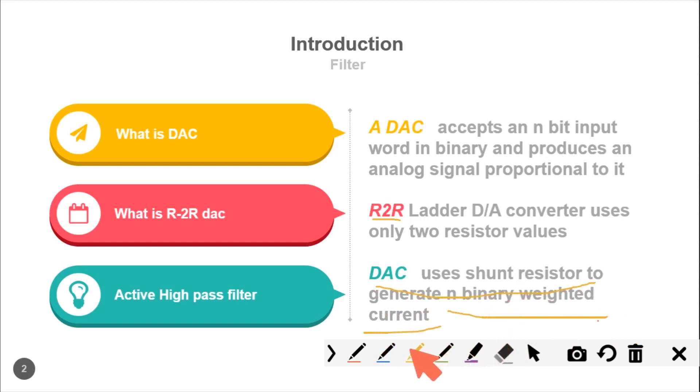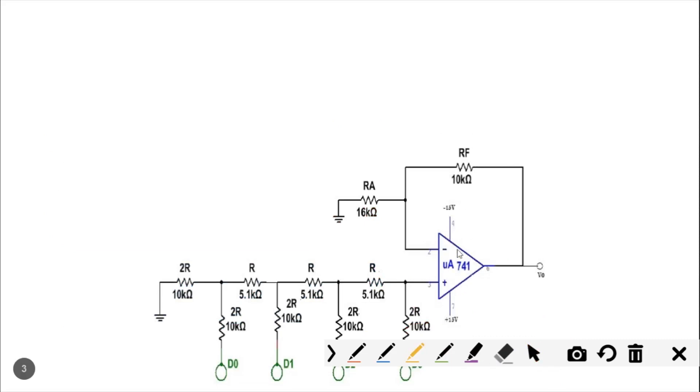You can see the op-amp connected to terminals 2 and 3. Terminal 2 is connected to RA, which we will show how to calculate. We have used shunt resistors connected directly to the inputs D0, D1, D2, and D3. These are all the inputs, each with a switch. Whenever you press the switch, 5 volts will come.